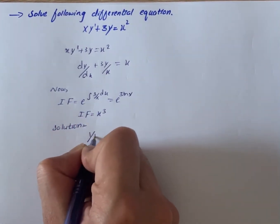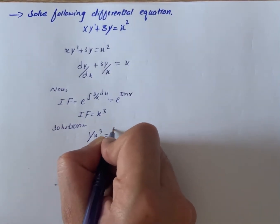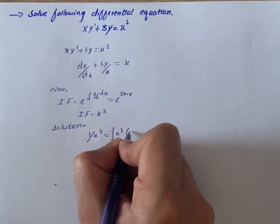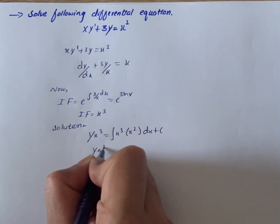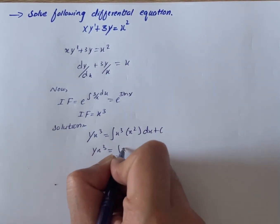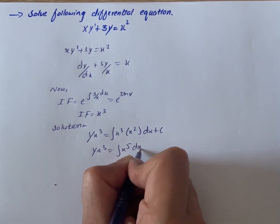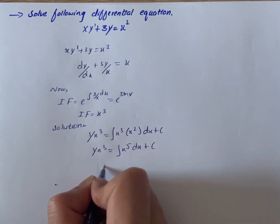Solution can be given by y·x³ equals integral of x³ times x² dx plus c. So we have y·x³ equals integral of x raised to power 5 dx plus c.